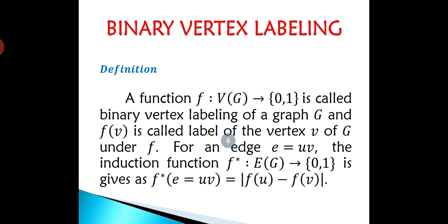The definition of binary vertex labeling is a function f: V(G) → {0,1} is called binary vertex labeling of a graph G and f(v) is called label of the vertex v of G under f.